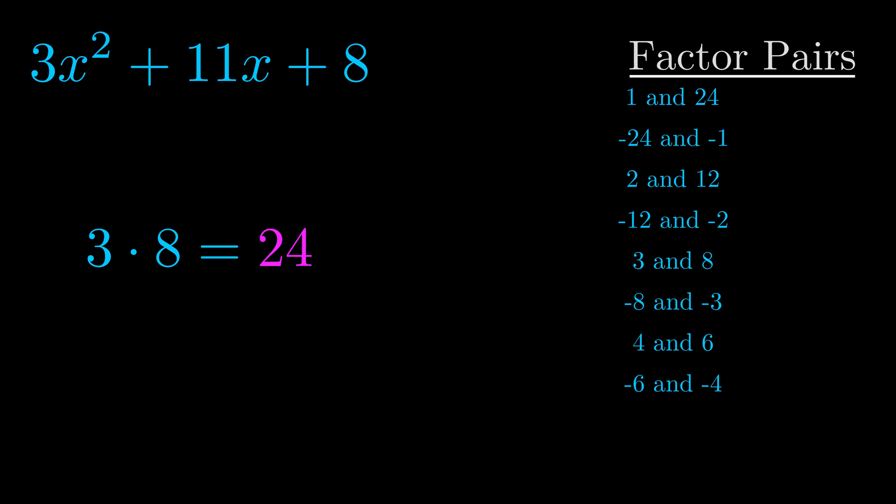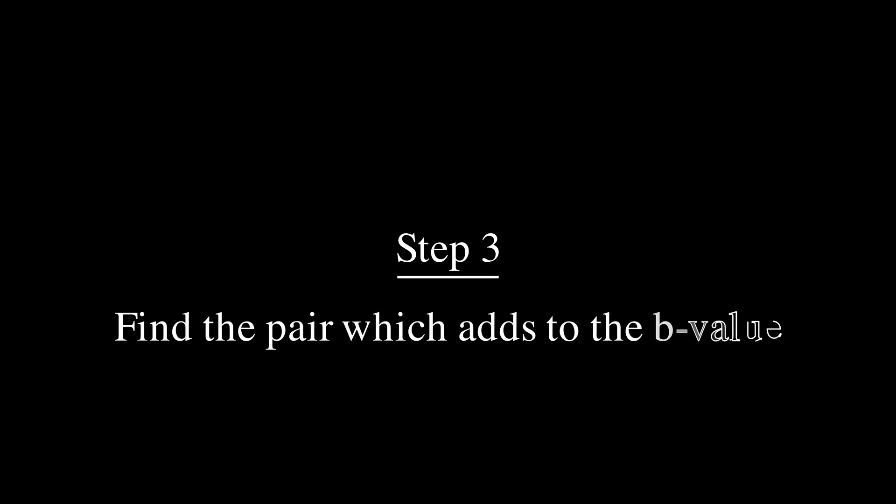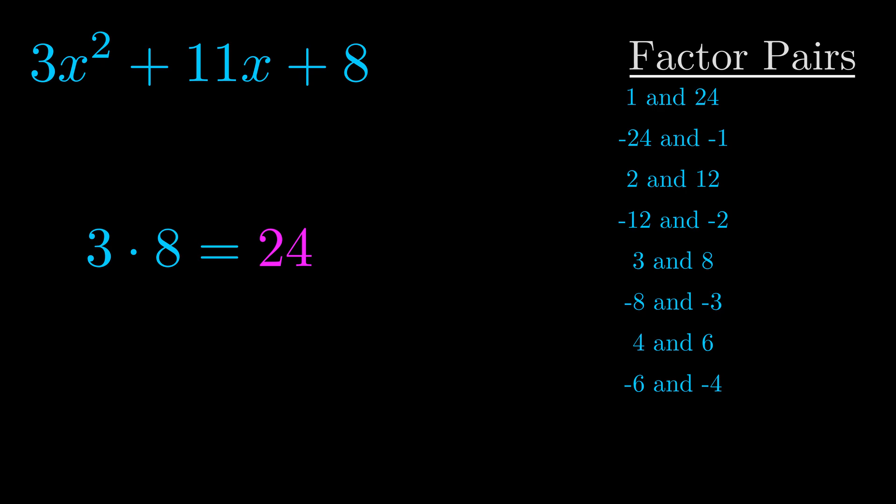Now once you have these factor pairs, the goal is to find which of these pairs adds to the b value. The b value is the coefficient on the x term. That's the middle term, the one that we haven't done anything with yet. And really this is the only factor pair that we need.